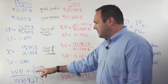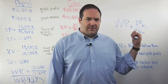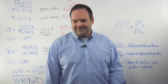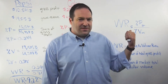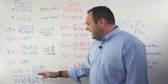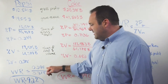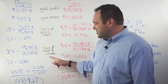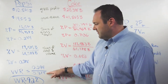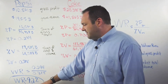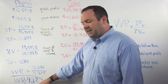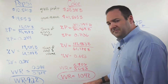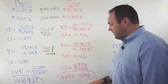With these numbers, you now put them into the equation — the share of total gross profit over the share of total dollar volume. And for Pepsi, they get a VVR of 92%, and for Coke, a VVR of 104.